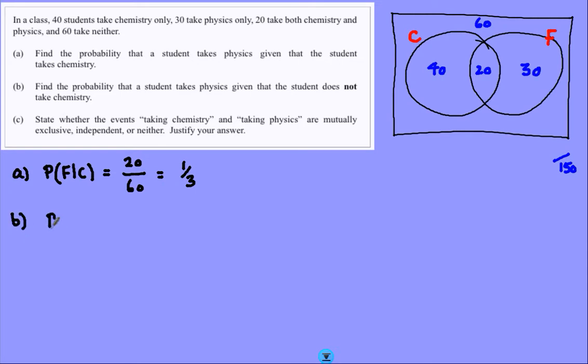Part B, another conditional probability. Physics given that you do not take chemistry. Have a quick look here. If you do not take chemistry, you are one of these 30 or one of these 60. You're one of 90 outside the chemistry bubble, and 30 of those happen to be physics. So outside the chemistry bubble, 30 out of 90, one third is the answer.